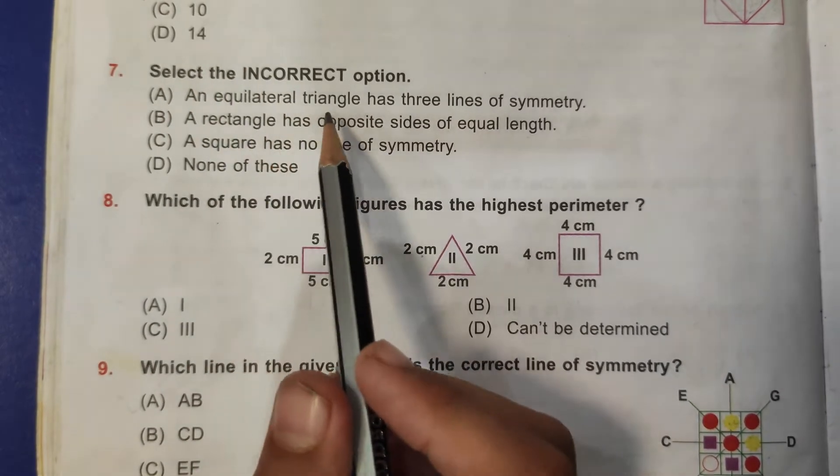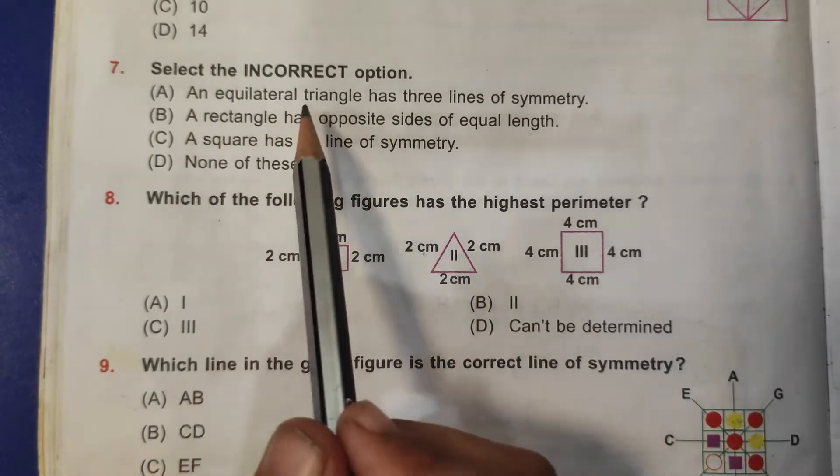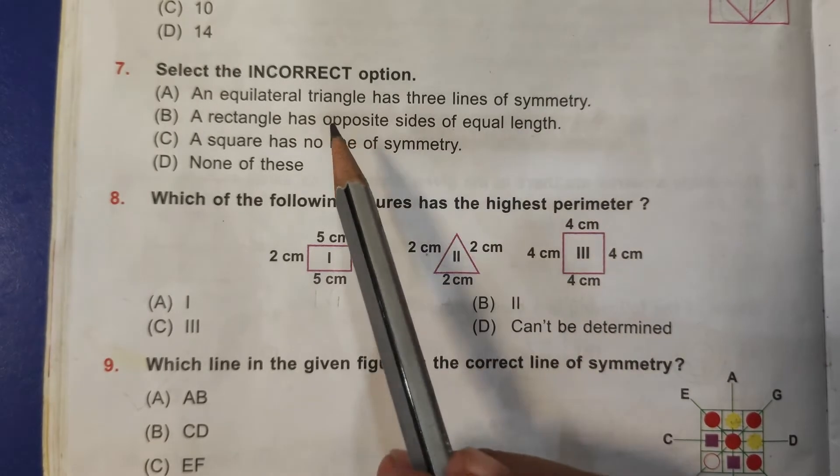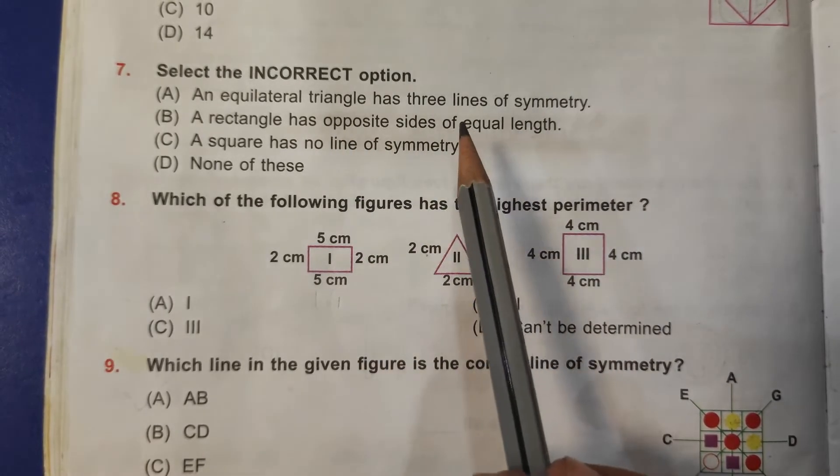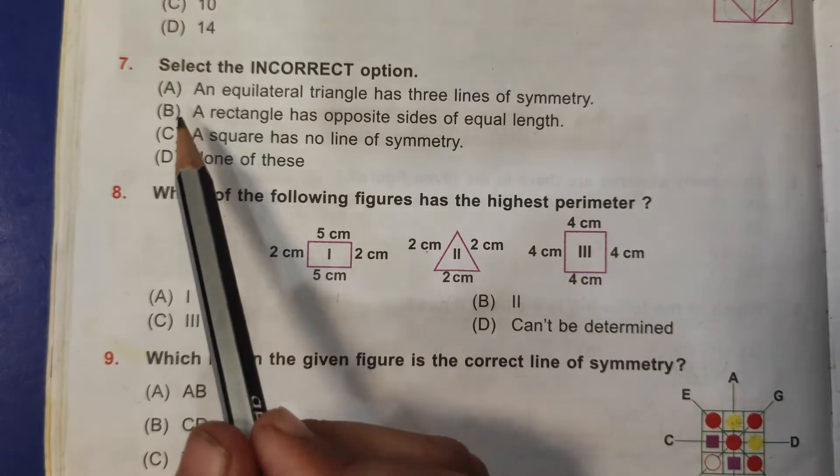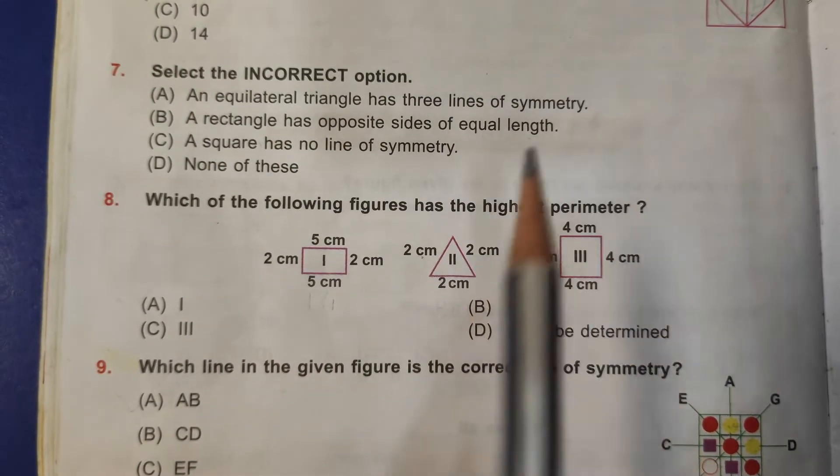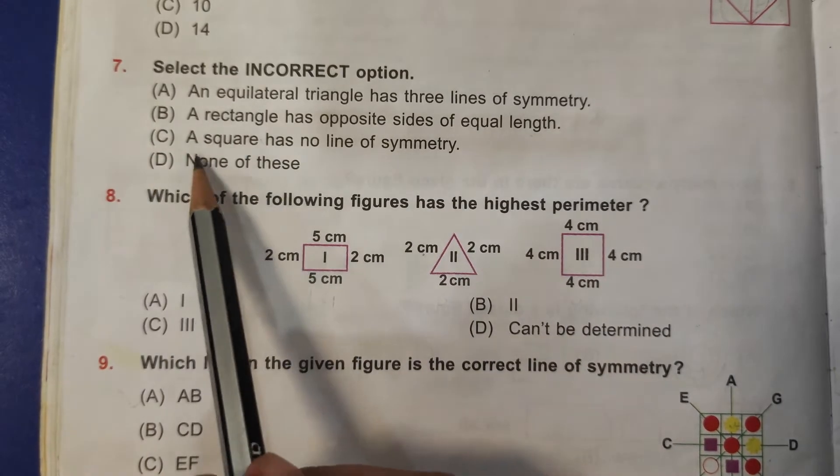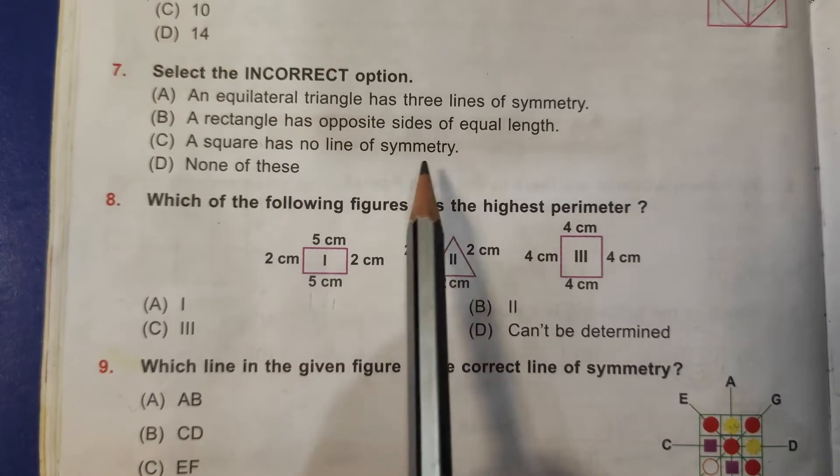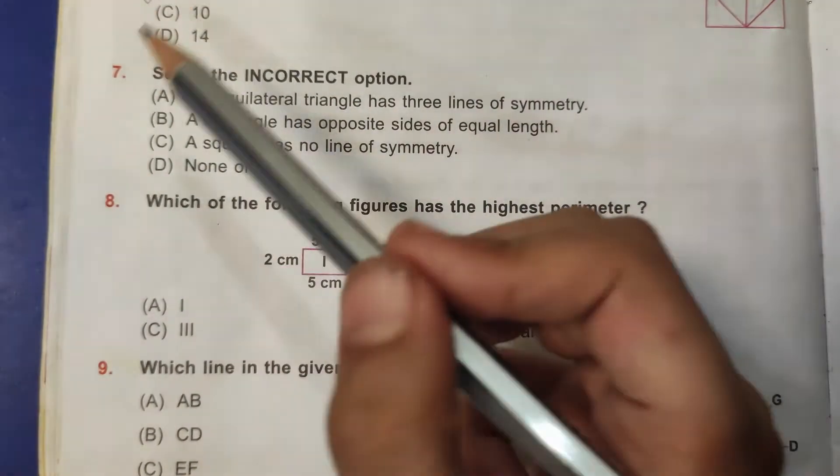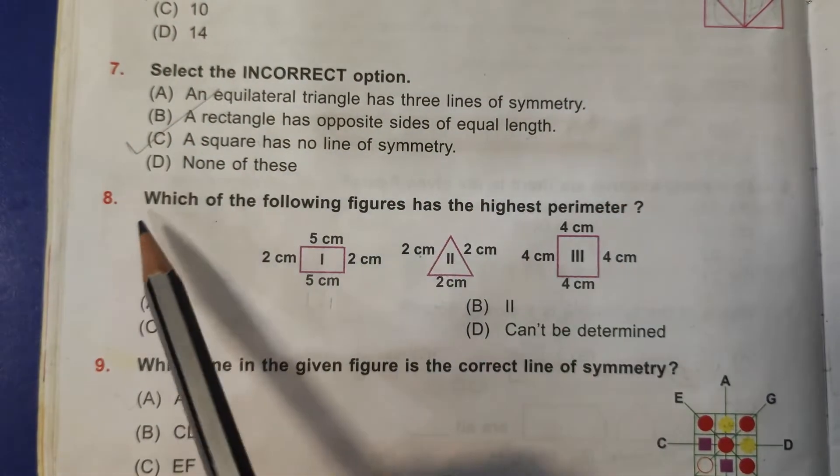Seventh question: select the incorrect option. An equilateral triangle has three lines of symmetry - this is true because equilateral triangle has all sides equal. A rectangle has opposite sides of equal length - this is true. C, a square has no lines of symmetry - this is incorrect because all the sides are equal. So C is the correct answer.